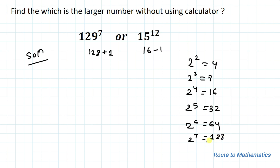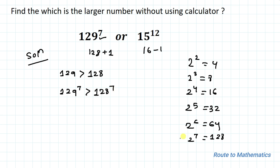First, I can write 129 is greater than 128. Now taking the 7th power on both sides, we have 129^7 is greater than 128^7. And we know that 128 is nothing but 2^7, so substituting that value we have 129^7 is greater than (2^7)^7.